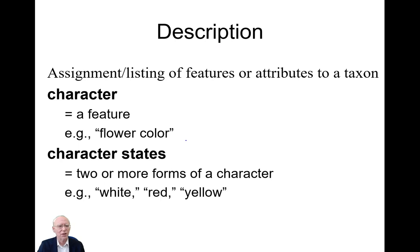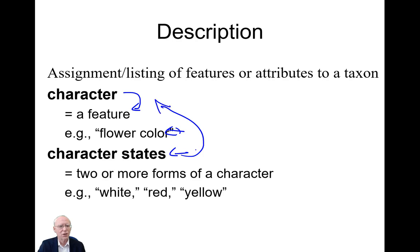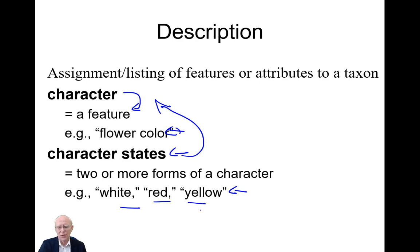Characters and character states: a character is simply a feature of an organism — for instance, flower color. The character states are the various states that character has, such as white, yellow, red, etc.